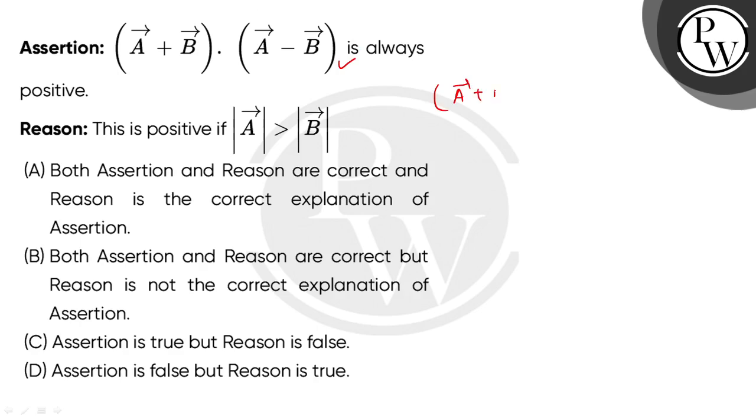The assertion gives us (A+B)·(A-B). Expanding this, we get A·A + A·(-B) + B·A + B·(-B). This is A·A here, which will be |A|², and B·A and B·B.